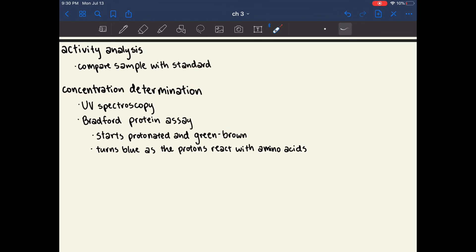The concentration of this sample of protein can be calculated using either UV spectroscopy or a Bradford protein assay. UV spectroscopy is very helpful in calculating the exact concentration of a protein because the absorbance at a particular wavelength is correlated to the concentration of protein. A Bradford protein assay utilizes a specific blue dye that starts out protonated and green-brown when it is alone. However, when this dye is added to a solution of protein, the protons in the dye start to react with the amino acids and the dye begins to turn blue. The higher the concentration of protein in the sample, the more blue the Bradford dye becomes.